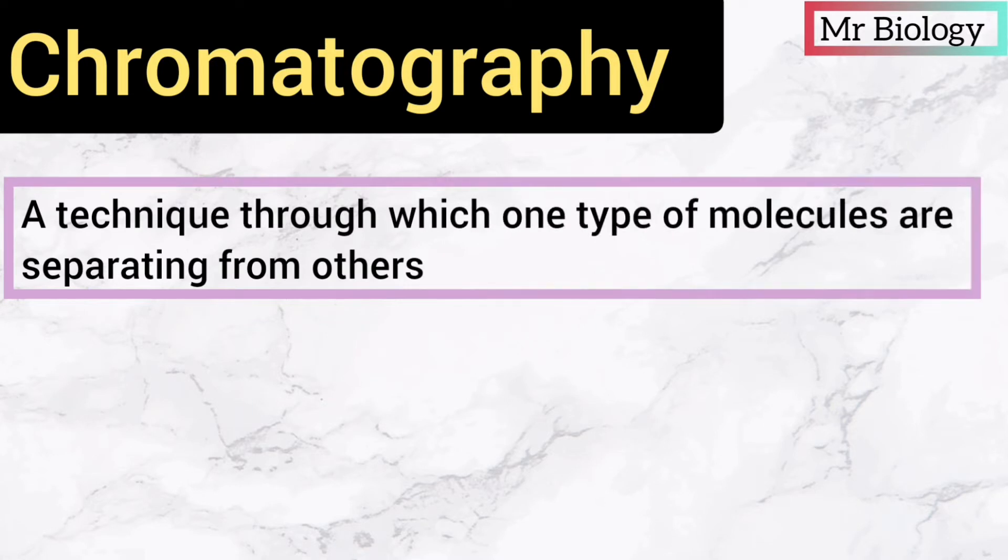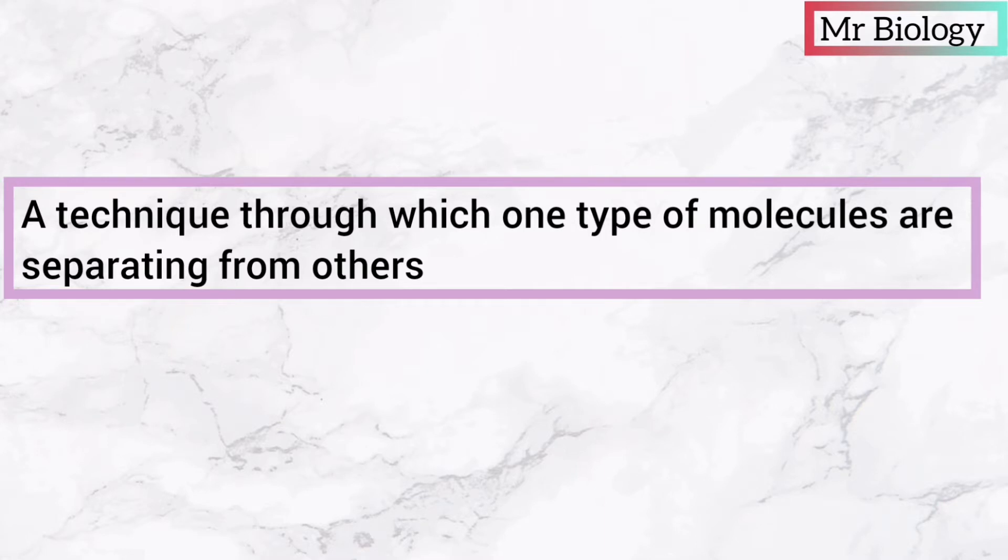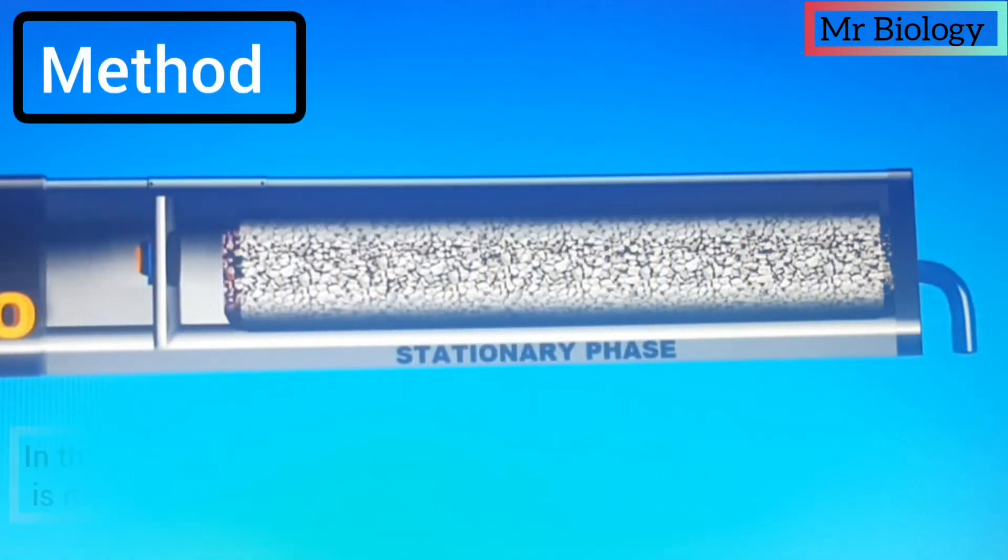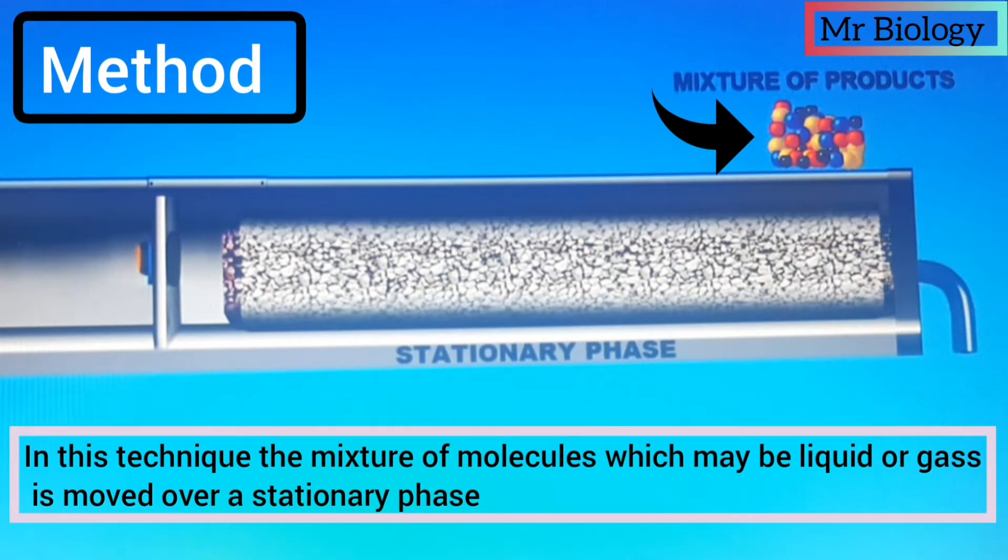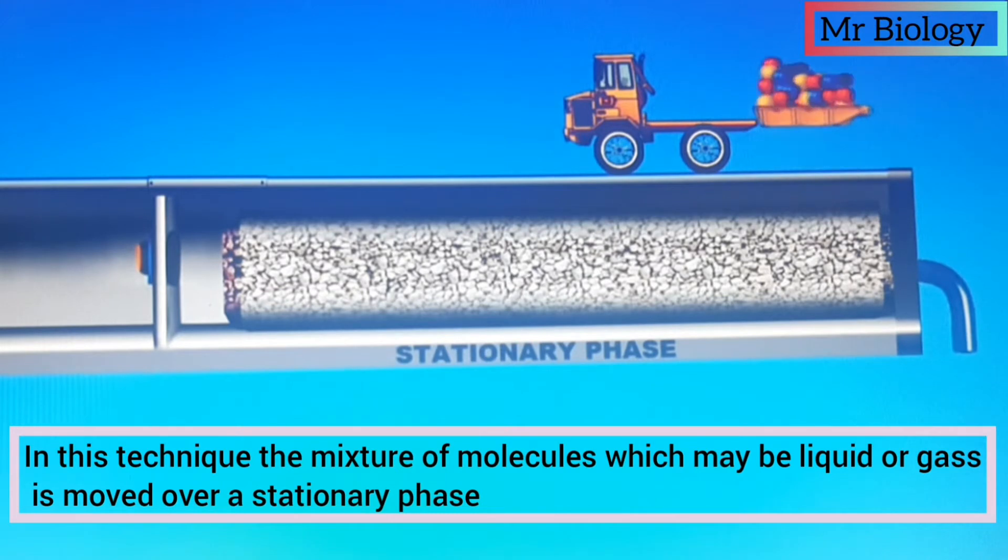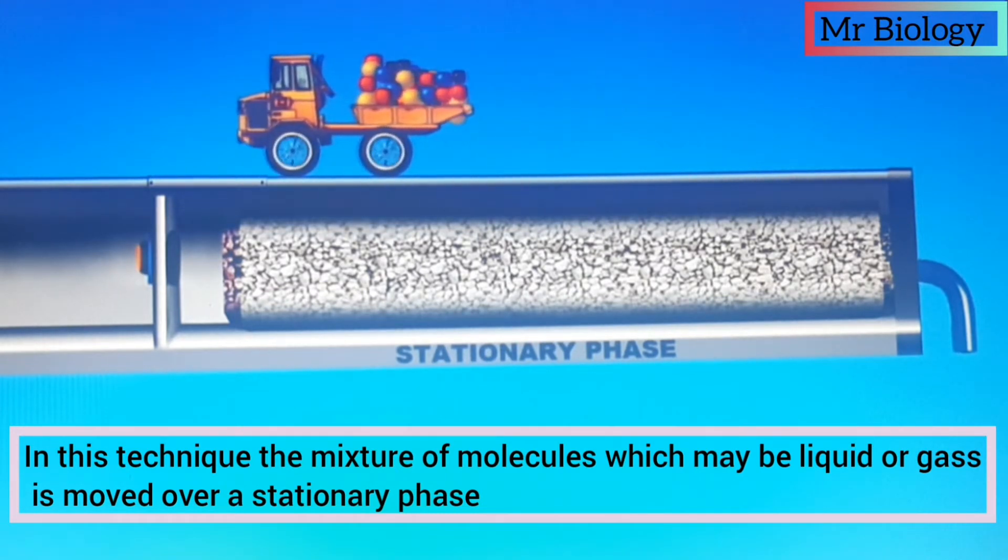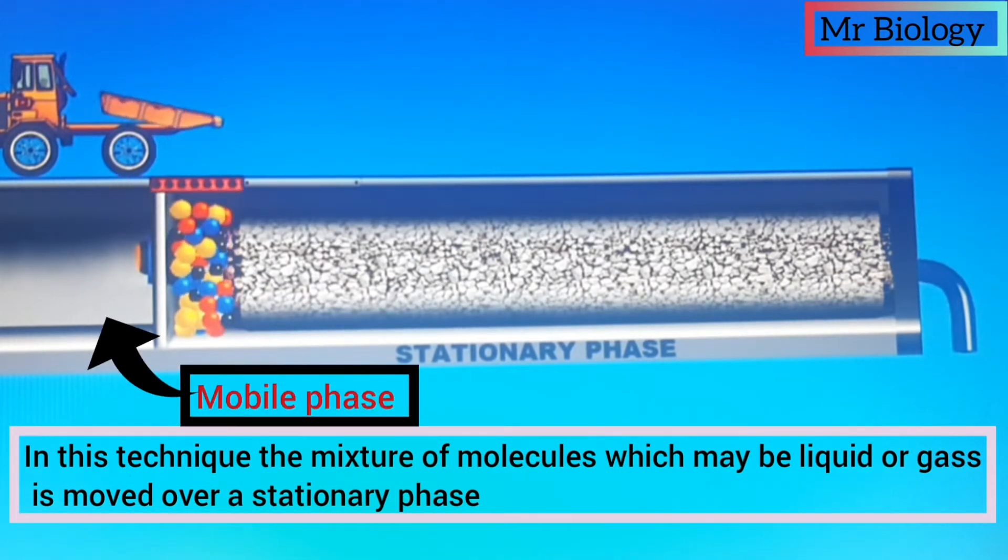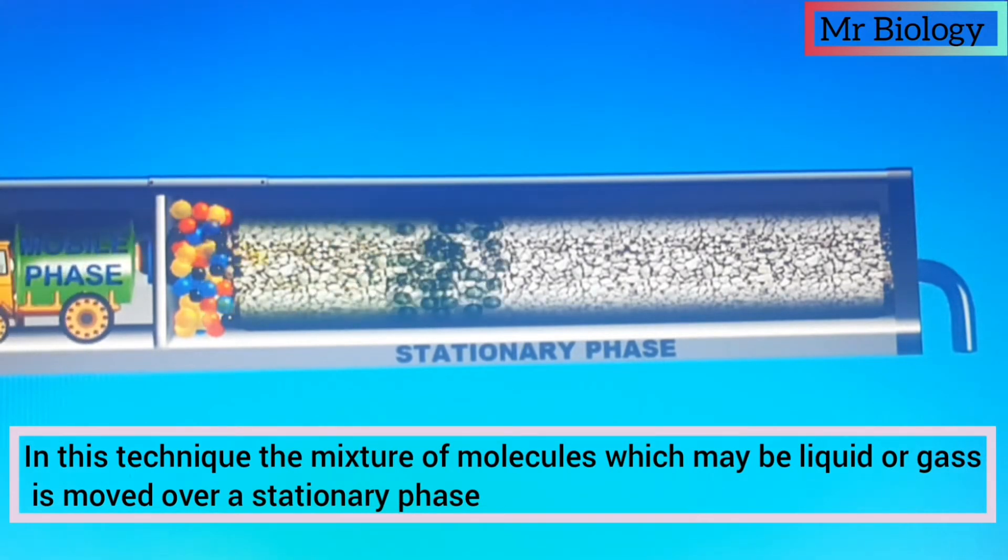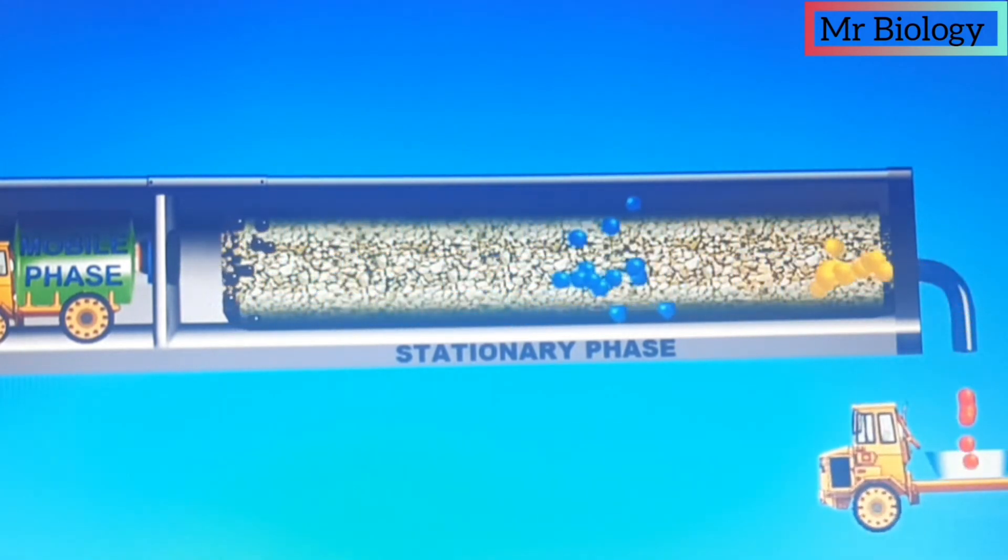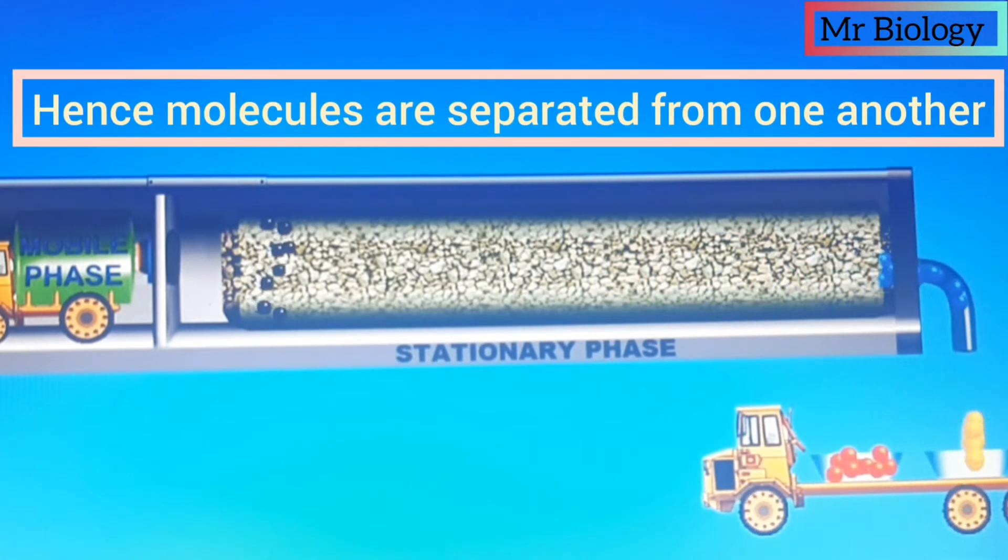Chromatography is a technique through which one type of molecules are separated from others. In this technique, the mixture of molecules, which may be liquid or gases, is moved over a stationary phase. There are two phases: one is stationary phase, another is mobile phase. Mobile phase pushes the mixture through stationary phase.